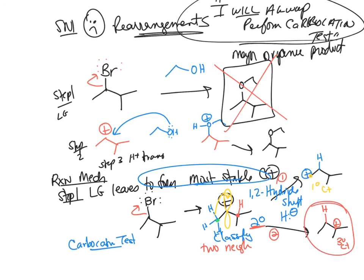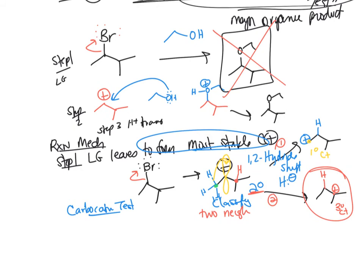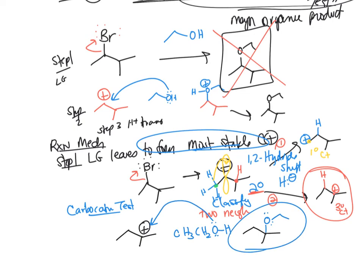The tertiary carbocation will form via the 1,2-hydride shift. Then ethanol comes in and adds to the carbocation, followed by a proton transfer to give the neutral product. That is your product from a rearranged SN1 reaction.